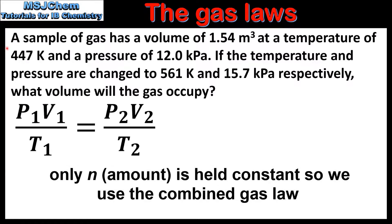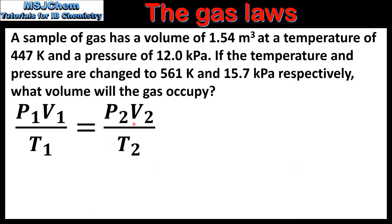In our last example a sample of gas has a volume of 1.54 cubic metres at a temperature of 447 kelvin and a pressure of 12.0 kilopascals. If the temperature and pressure are changed to 561 kelvin and 15.7 kilopascals respectively, what volume will the gas occupy? To solve this we'll use the combined gas law. In the question we're given P1, V1, T1, P2 and T2, so we need to rearrange the equation to solve for V2.